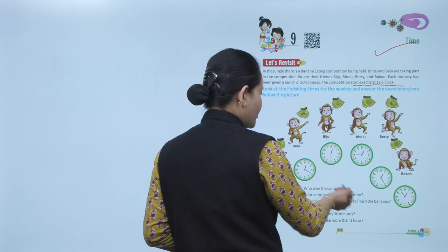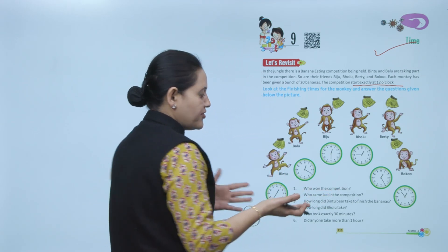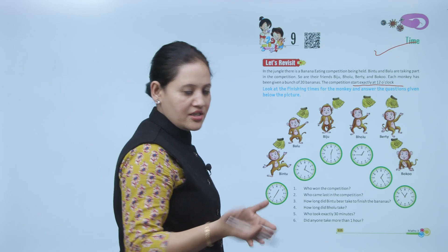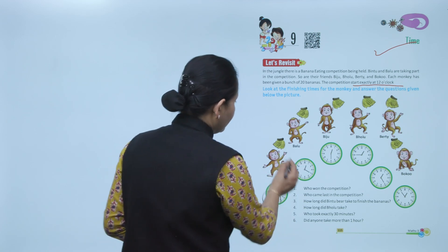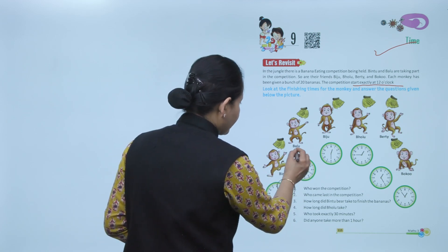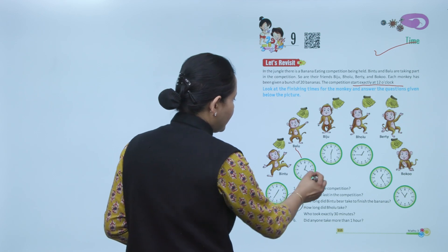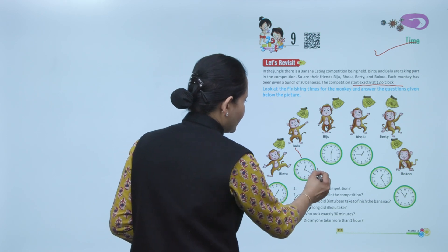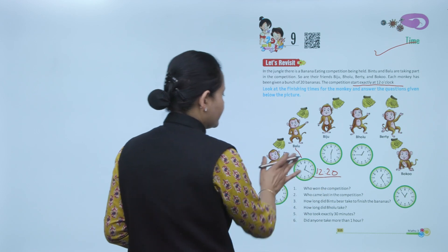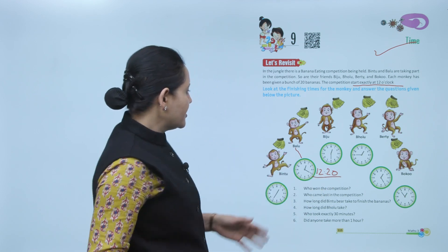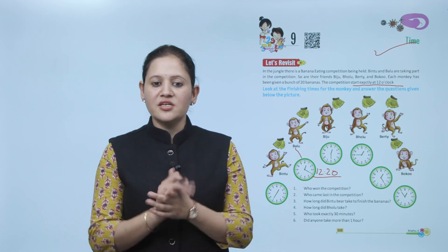Who won the competition? He will win the competition. Look at this clock — Baloo's time is 12:20, so he is the winner of this competition because he finished all the bananas in 20 minutes.